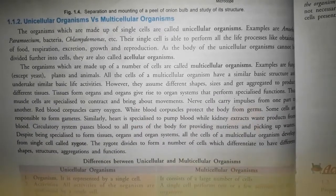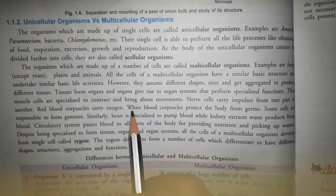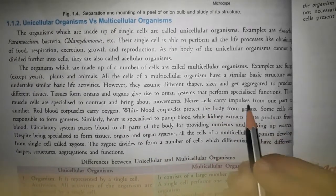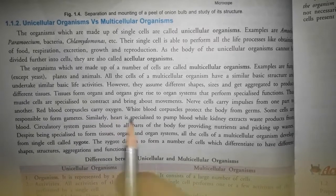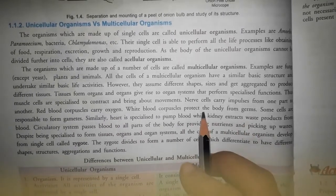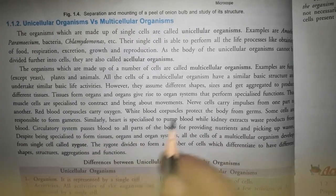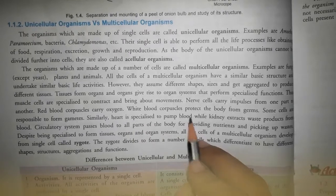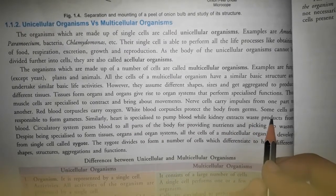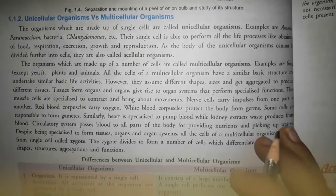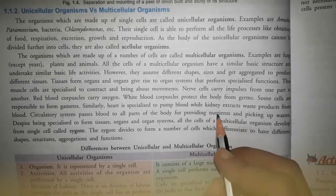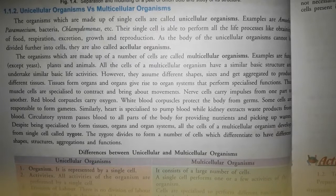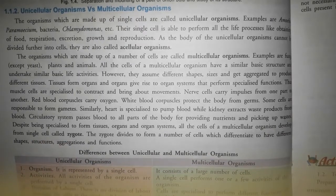Muscle cells contract करके और relax करके body movement को control करते हैं. Nerve cells impulse को carry करते हैं एक body part से दूसरे तक. Red blood cells (RBC) oxygen carry करने का काम करते हैं. WBC हमें germs के against protect करते हैं. कुछ cells gametes बनाते हैं. Heart blood pump करने के लिए specialized है. Kidney blood से waste product निकालती है. Circulatory system पूरे body में blood pass करता है ताकि सबको nutrients मिलें.